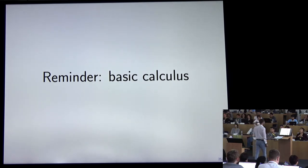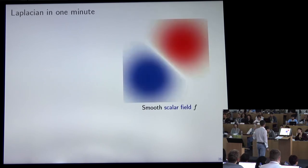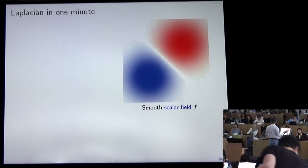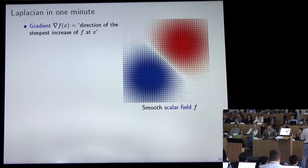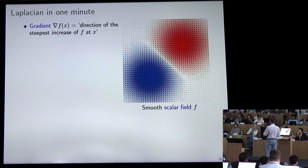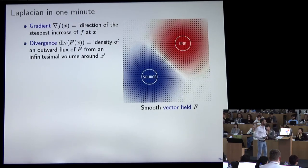Let's do a little bit of math, reminding you of basic notions in vector calculus. Imagine you are given a scalar function — think of temperature in this room, which will vary across space. We can compute the gradient of this function: think of it as a field of arrows where at each point the arrow points in the direction of steepest increase. We can define divergence: given a vector field like the gradient, divergence is the density of flux — how much arrows go in or out.